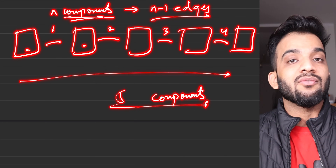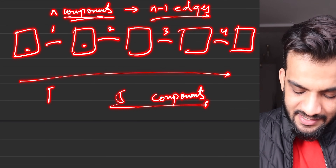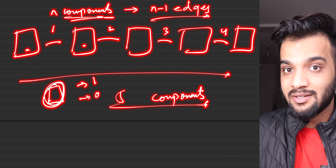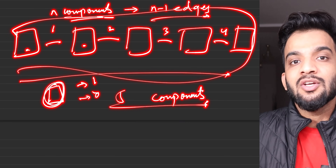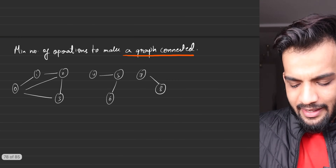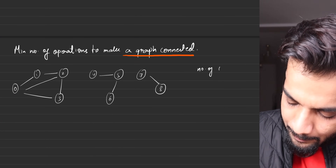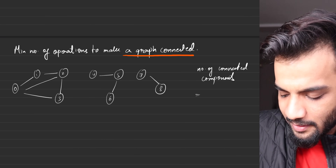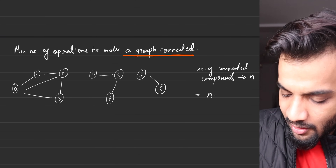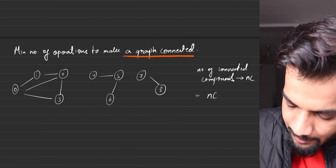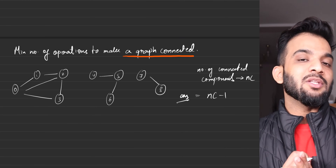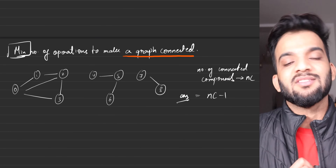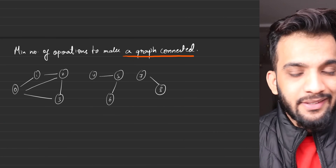It's very simple — connect component to component, then connect here, then connect here, then connect here. So for five components I required four edges. Can I say for n components I require n minus one edges to make it a single graph? If I just have a single component — one component — it will require zero edges. So the answer is always: number of connected components minus one, and that is always the minimum.